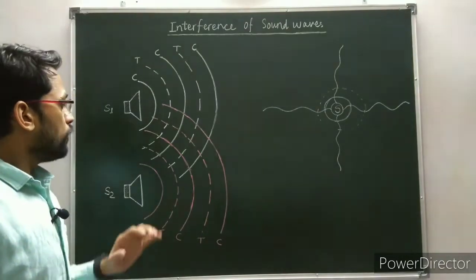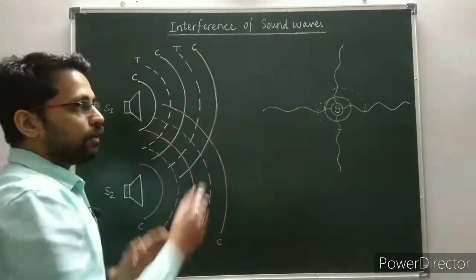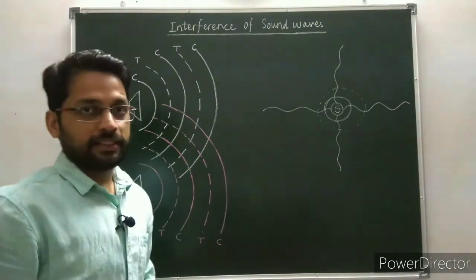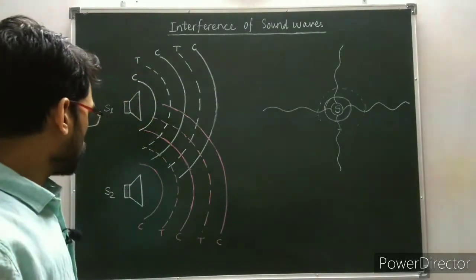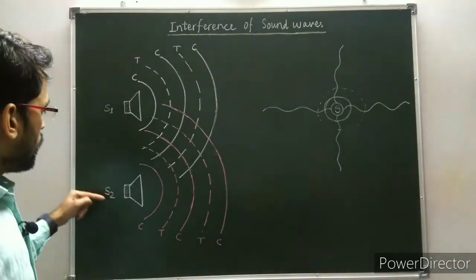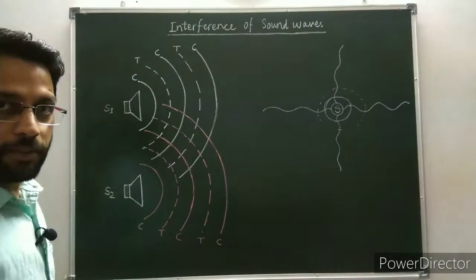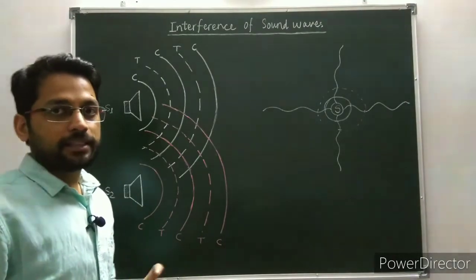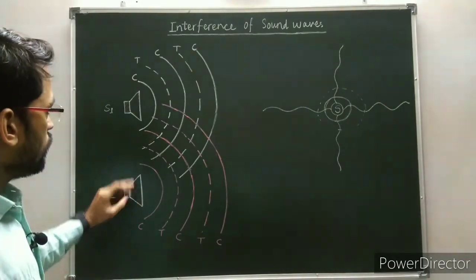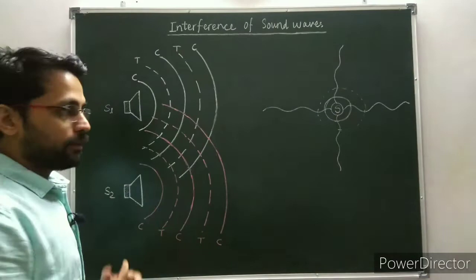If there is only one source in the medium, then the intensity of the sound decreases gradually as distance increases. But if we have another identical sound source — S1 and S2 are identical — it means both have the same frequency and there is a constant phase difference between them. Then the sound waves produced by the two identical sources interfere with each other.